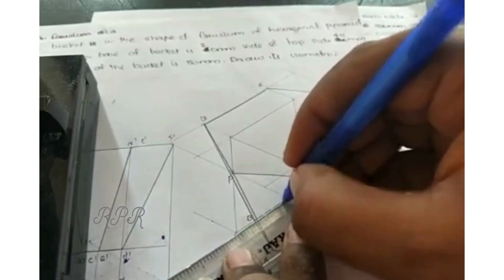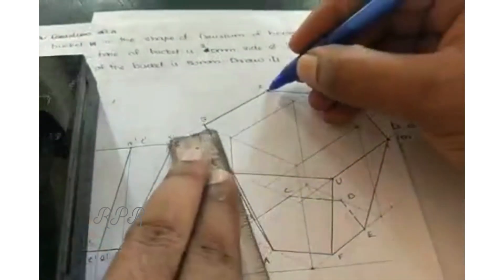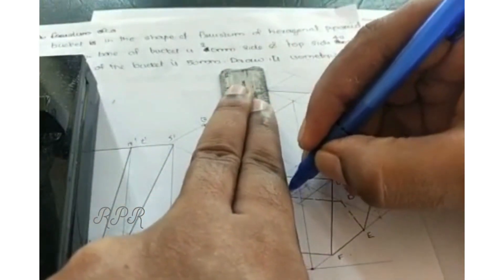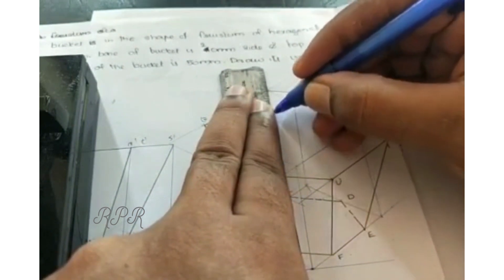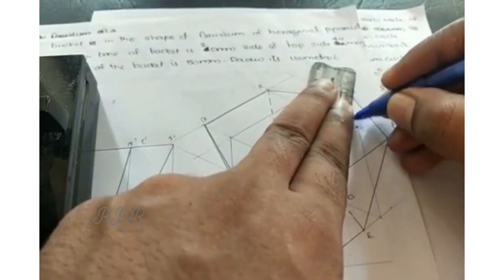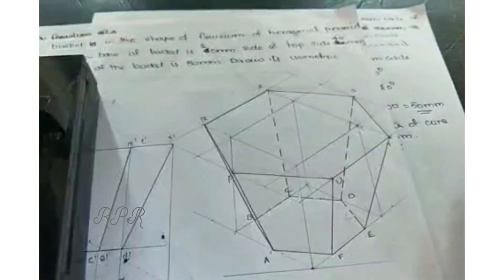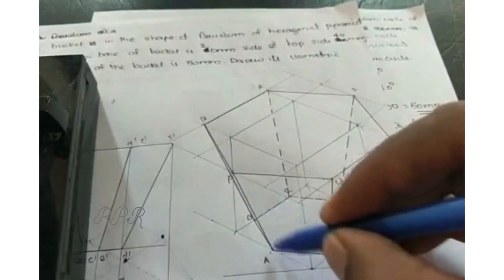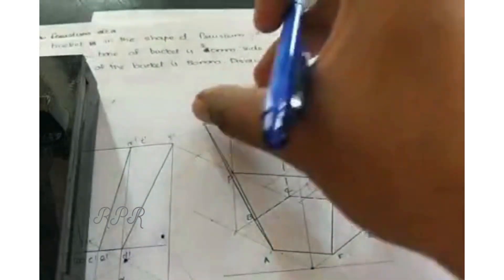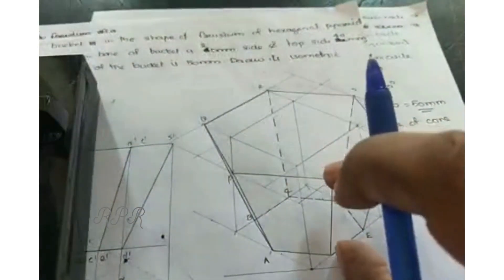And this is the isometric view. This is the bucket shape, bottom side with 20mm side and top side with 40mm side and height 50mm.